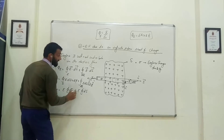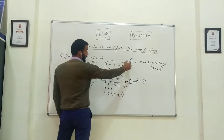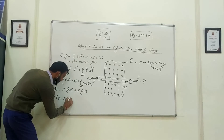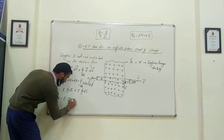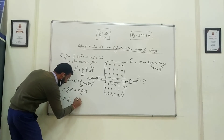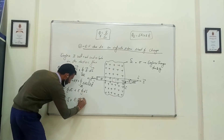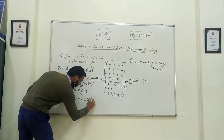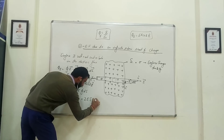So the total electric flux is ES plus ES, which equals 2ES. This is equation number 1.